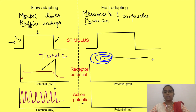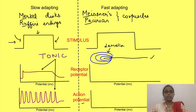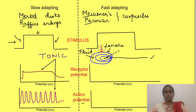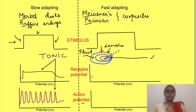For fast adapting receptors, we will take the example of the Pacinian corpuscle. This diagram shows a Pacinian corpuscle, which is a modified nerve ending with various connective tissue layers, and inside there is an unmyelinated nerve ending with ion channels. In between the layers there is fluid. When a stimulus comes, it distorts these connective tissue layers causing the movement of fluid in between the layers, which in turn deforms the membrane of the nerve ending present inside these lamellae. This leads to opening of ion channels and entry of sodium, causing a change in the receptor potential.